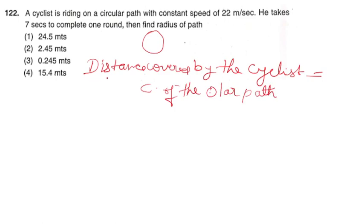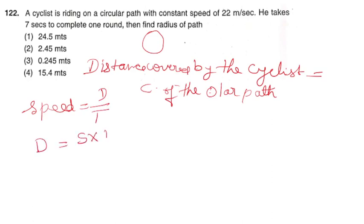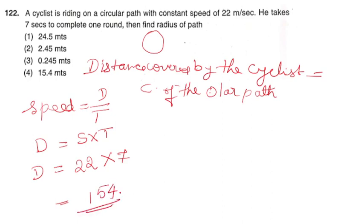Distance covered by the cyclist equals the circumference of the circular path. Distance equals speed into time: 22 metres per second multiplied by 7 seconds equals 154 metres.